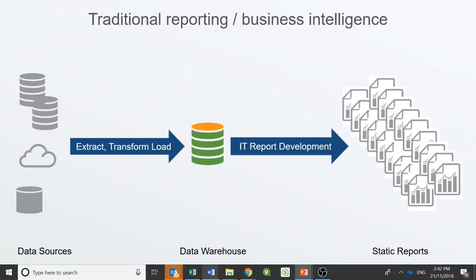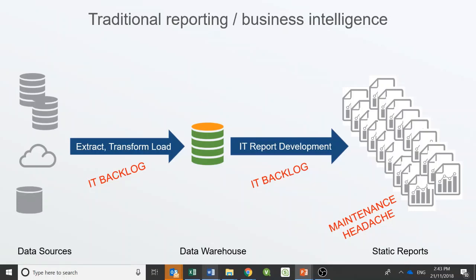Qlik takes a different approach to other vendors in terms of enabling businesses with analytics. With traditional reporting, there is generally a focus on getting data into a single repository where the enterprise reporting platform can access it. Reports are then usually developed by IT or by reporting specialists. Static reports generally only answer one or two questions, so you need many reports to run an organization. In order to follow a line of inquiry, users need to move from one report to another — this is time consuming, frustrating, and ineffective. The main problem with this approach is that it takes a long time and a lot of effort to get data into the central repository, resulting in a backlog of ETL development work which hinders the business.